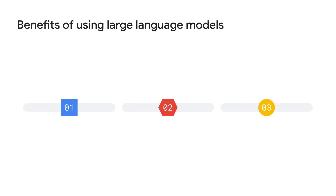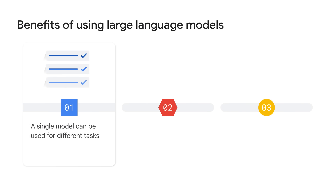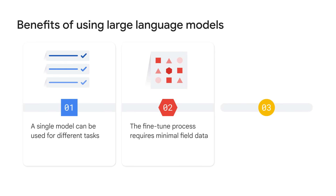The benefits of using large language models are straightforward. First, a single model can be used for different tasks. These large language models trained with petabytes of data and generating billions of parameters are smart enough to solve different tasks including language translation, sentence completion, text classification, question answering, and more. Second, large language models require minimal field training data when you tailor them to solve your specific problem. They can be used for few-shot or even zero-shot scenarios. Few-shot refers to training a model with minimal data, and zero-shot implies that a model can recognize things that have not explicitly been taught in the training before.